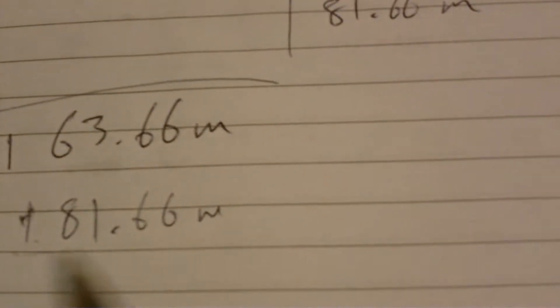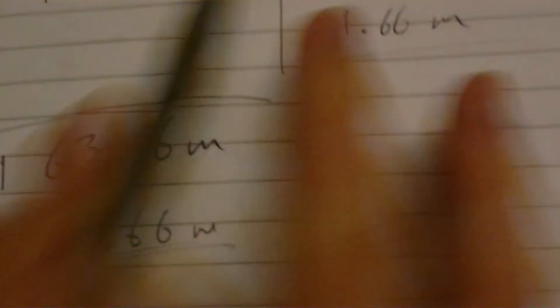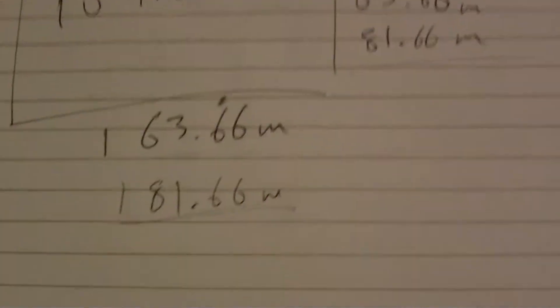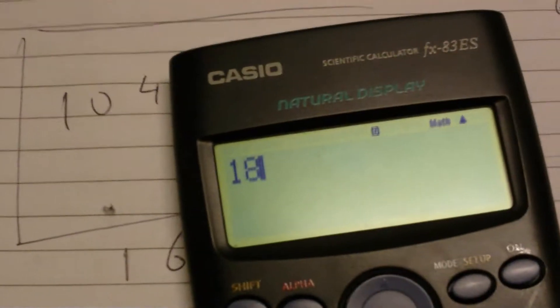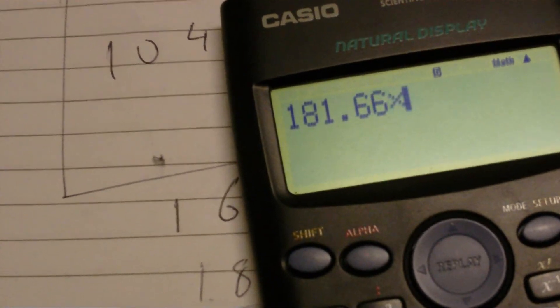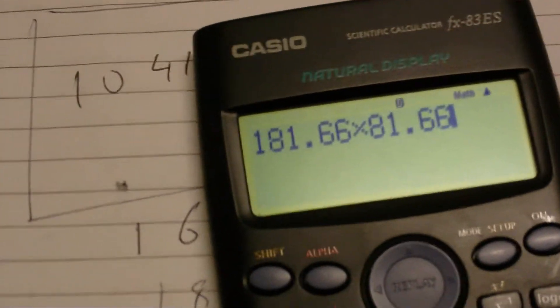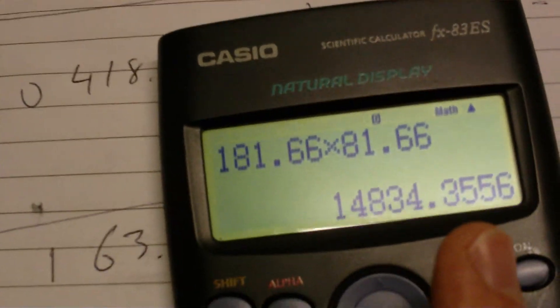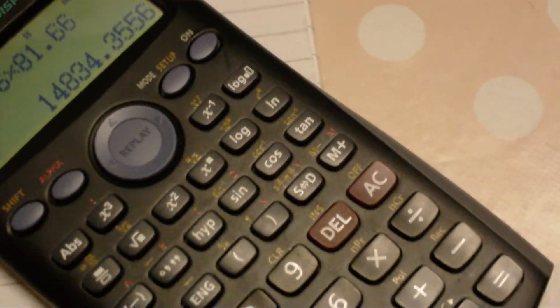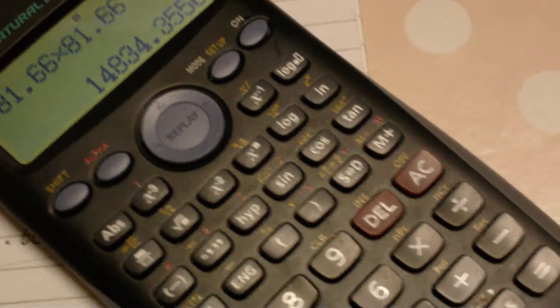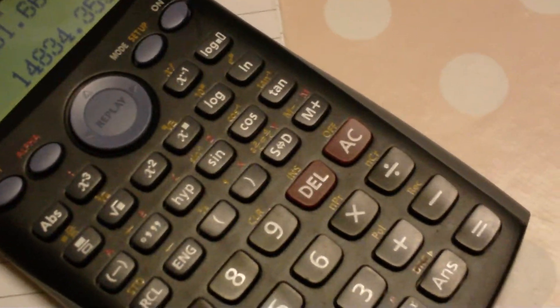Okay, so we've got some new, potentially more accurate method for calculating. If we put that in the calculator again, 181.66 times 81.66, we get this number of 14,834.36 meters squared, if we round it to the nearest decimal place.